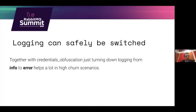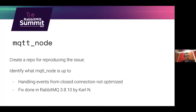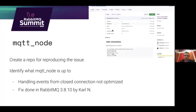For the error logger, if you have a lot of connection setups and teardowns, you can safely switch it to 'error' for the time being — that way you'll have a lot less churn because you're not logging every connection attempt. For MQTT node, we started by creating a public repo for reproducing this issue — '84codes MQTT connections' — which has come in handy for more than one case.